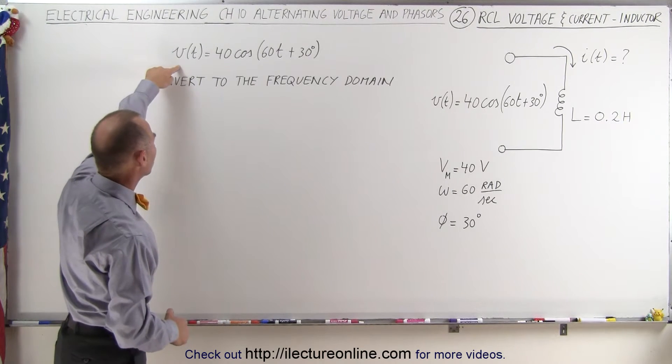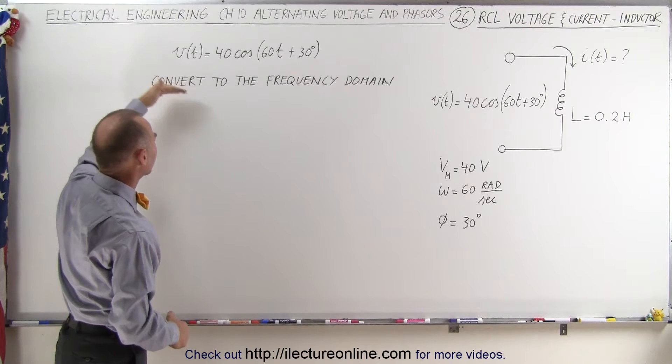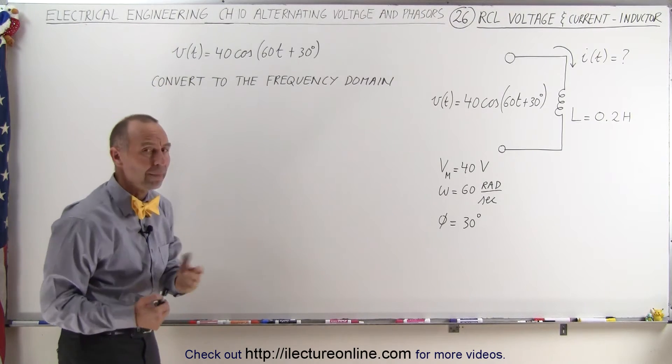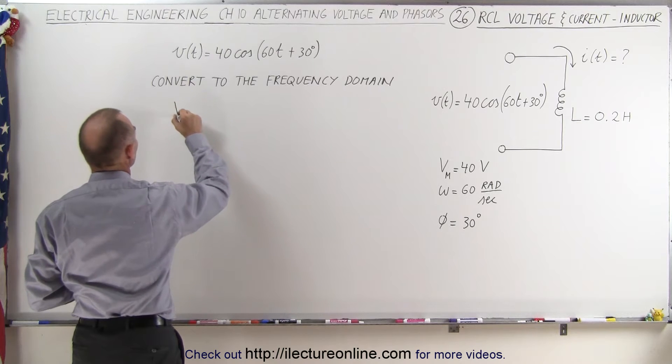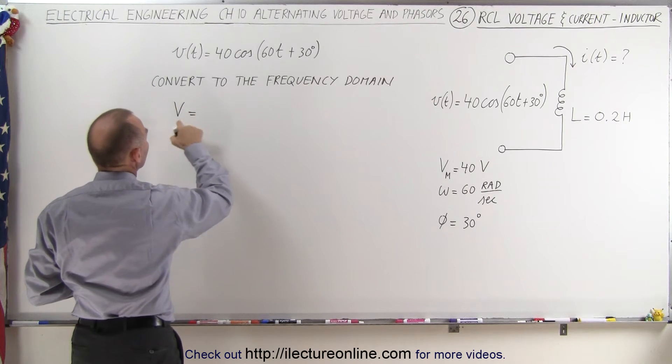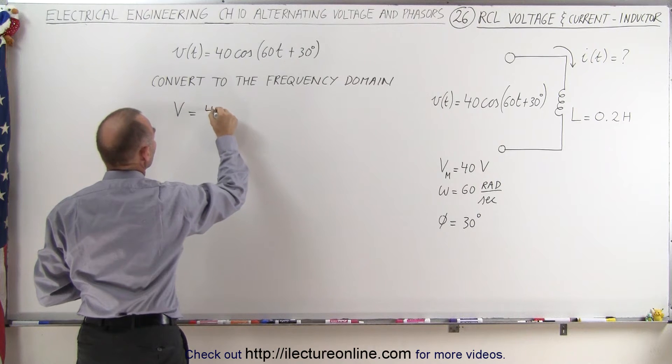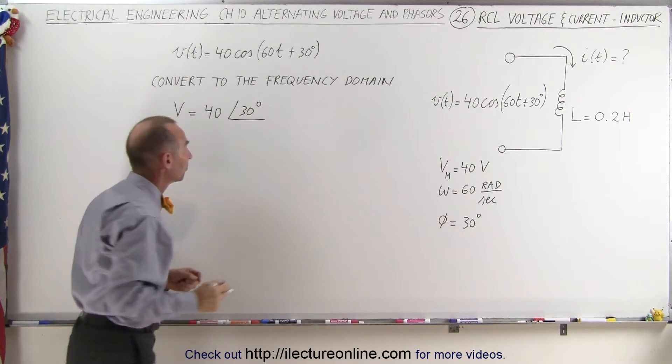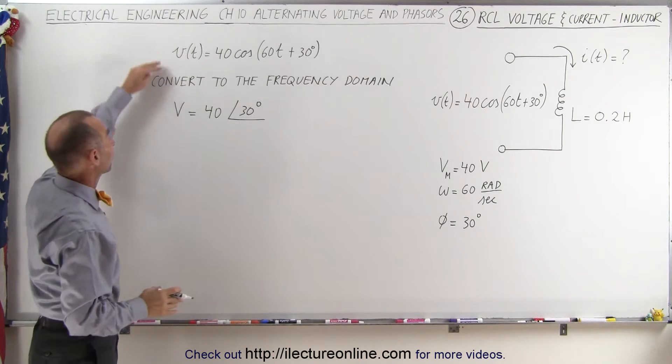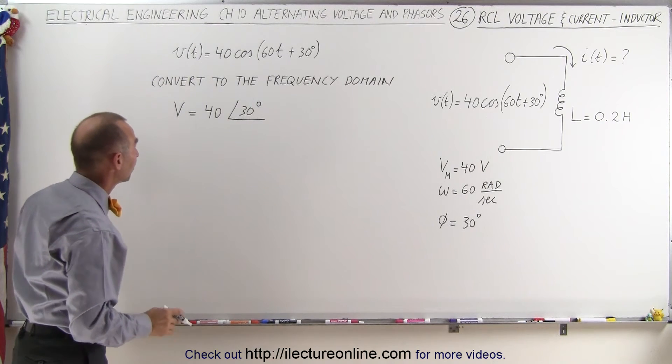We start with our voltage equation, and then we're going to convert the voltage equation to the frequency domain. We can do this as follows. So we know that the voltage in the frequency domain is going to be equal to the maximum voltage, 40, times the phase angle of 30 degrees. That's pretty easy to convert from the time domain to the frequency domain.